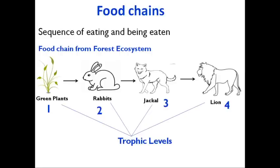So green plants are at the first trophic level, rabbits at the second trophic level, jackals at the third trophic level, and lions occupy the fourth trophic level in this food chain. It is not necessary that if an animal is participating in another food chain it will occupy the same position — the trophic level of animals may vary or change as the food chain changes. That was about the concept of trophic levels in food chains.